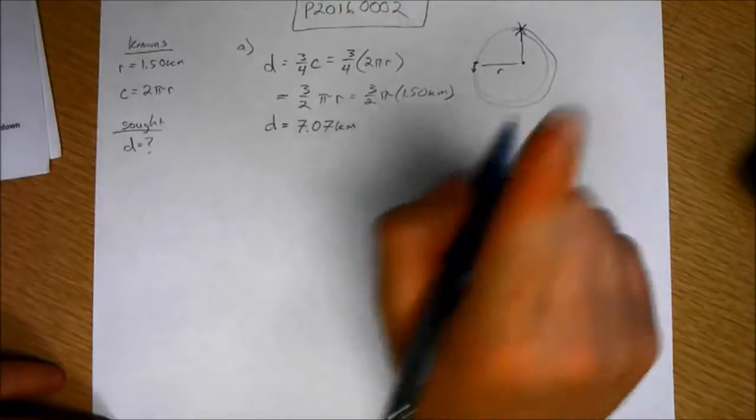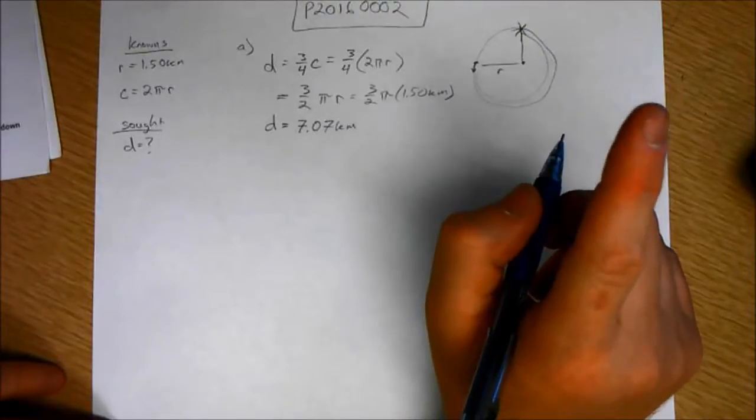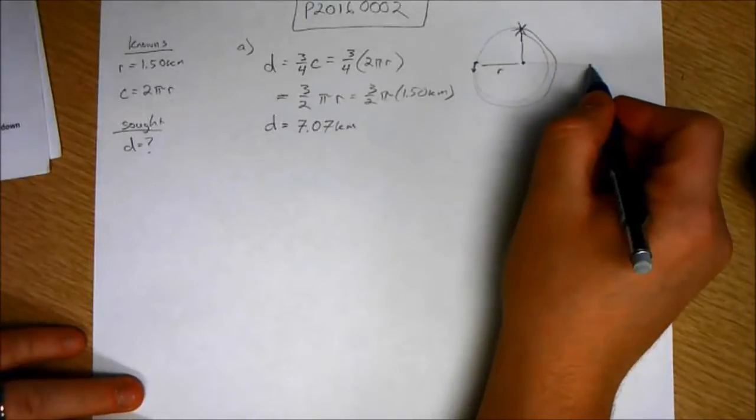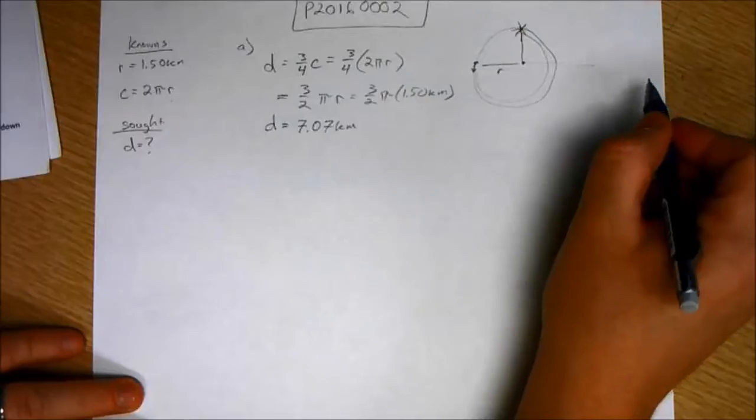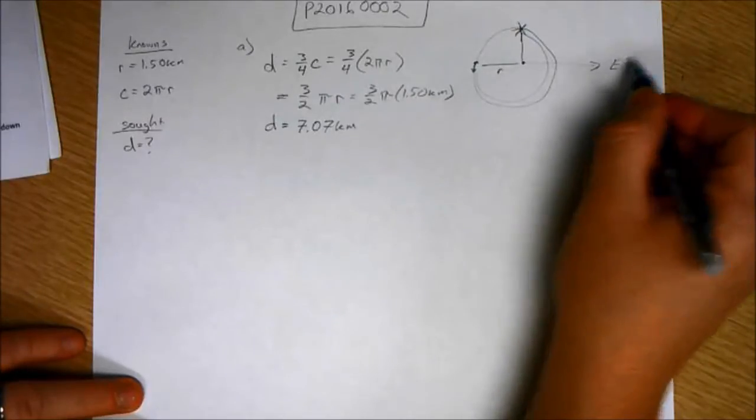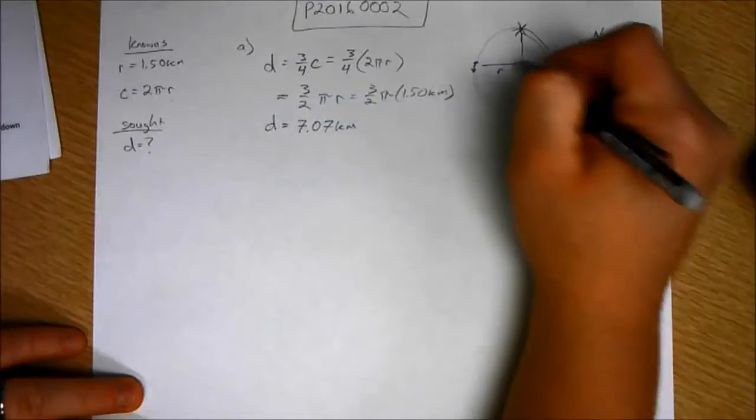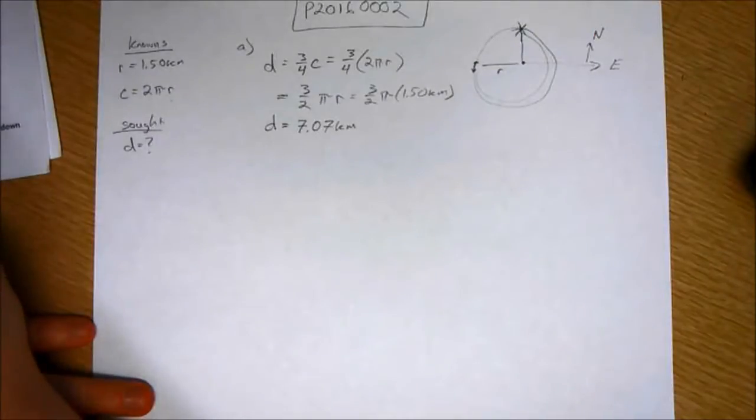Now part b says, what are the magnitude and direction relative to due east? So relative to due east, I should have labeled my north, south, east, west. What are the magnitude and direction relative to due east of the couple's displacement?